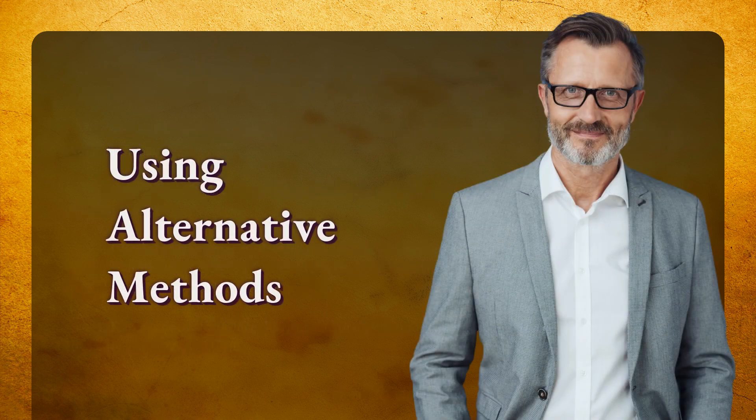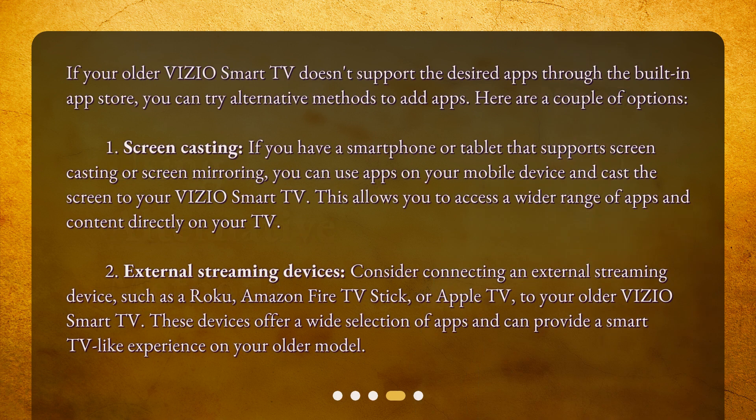If your older Vizio Smart TV doesn't support the desired apps through the built-in app store, you can try alternative methods to add apps. Here are a couple of options. First, screencasting. If you have a smartphone or tablet that supports screencasting or screen mirroring, you can use apps on your mobile device and cast the screen to your Vizio Smart TV. This allows you to access a wider range of apps and content directly on your TV.